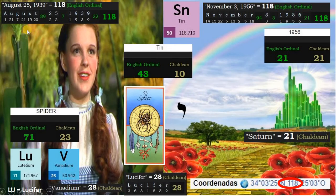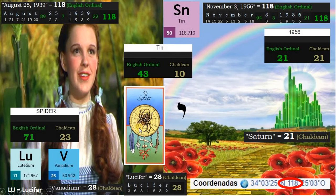The Wizard of Oz was first released in movies on August 25, 1939, and that equals 118 in English ordinal. The other date is the date of its first television broadcast, and here again we have 118. 118 is like 28, and this is Lucifer's number. 118 is also the atomic mass of tin. Tin is 43 in English ordinal and corresponds to the spider medicine card. Spider is 71 in English ordinal, matching element lutetium — Lu is Lucifer. Spider is 23 in Chaldean, matching element vanadium. Vanadium is 28 in Chaldean, like Lucifer. Tin is 10 in Chaldean, like the yod.